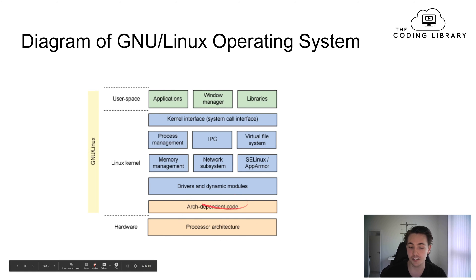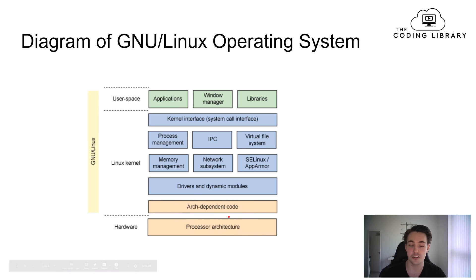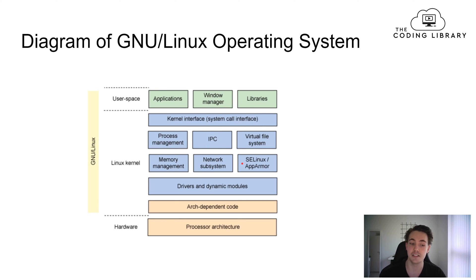Then we have architecture-dependent code before we go down to the hardware, where we have the processor architecture. So user space talks to the Linux kernel via the system interface, and then the Linux kernel actually performs the operations on the hardware.